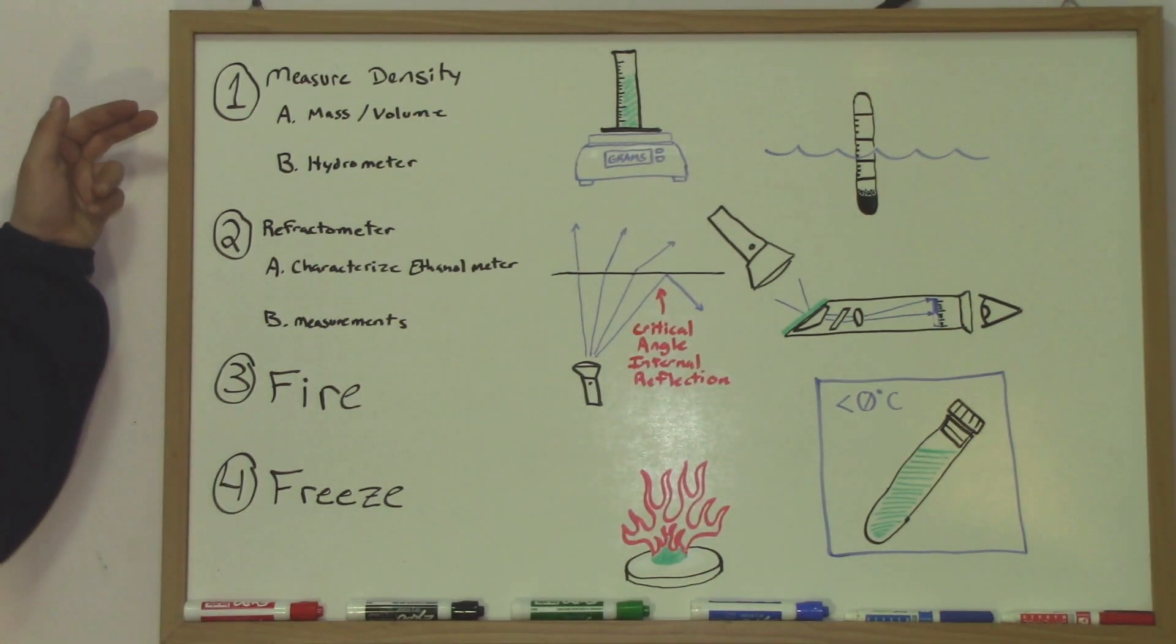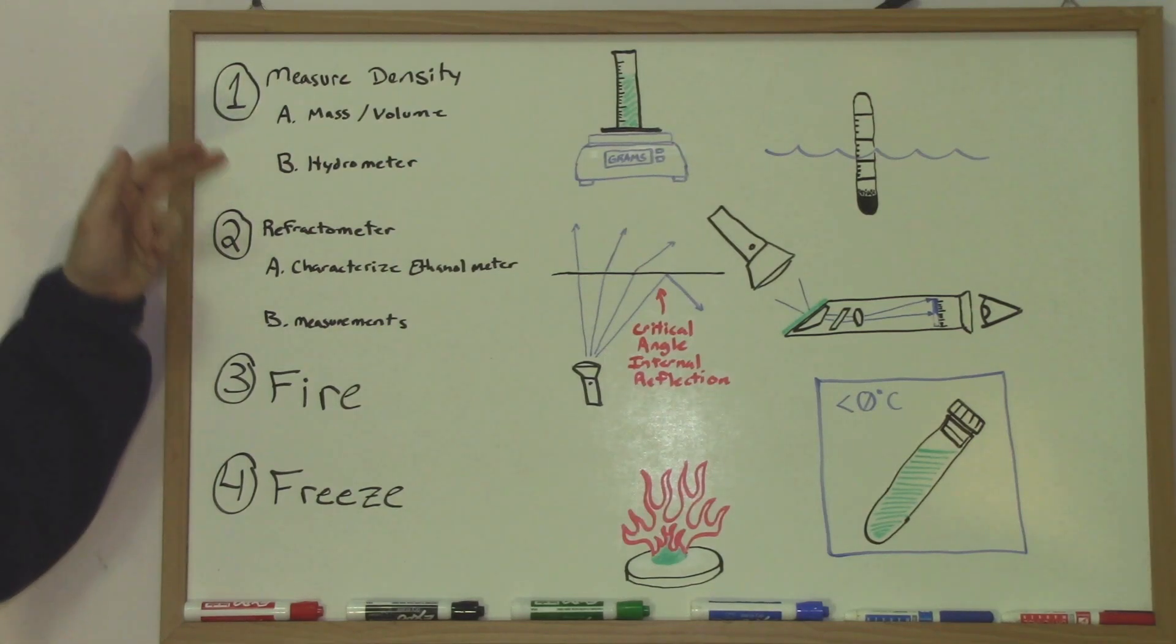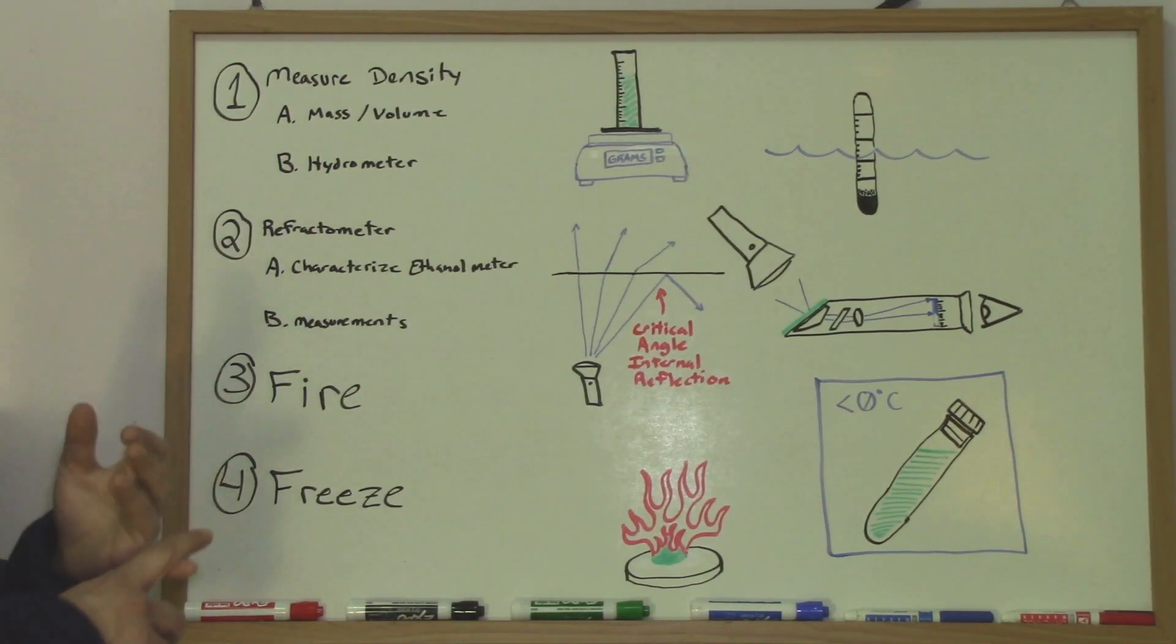The first way we have up here is to measure the density. Density is mass per volume, so if we can measure the mass and volume, then we can derive density.